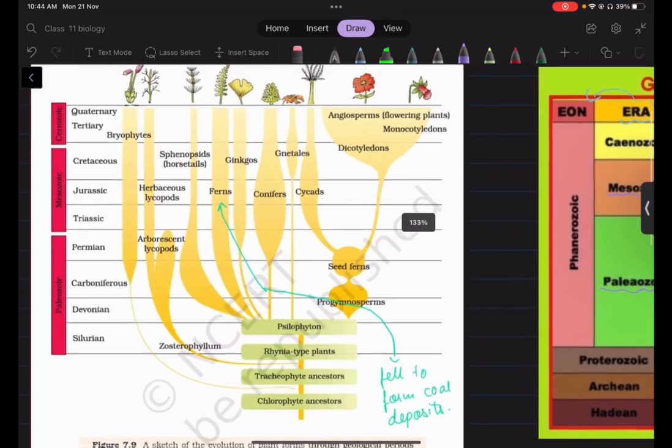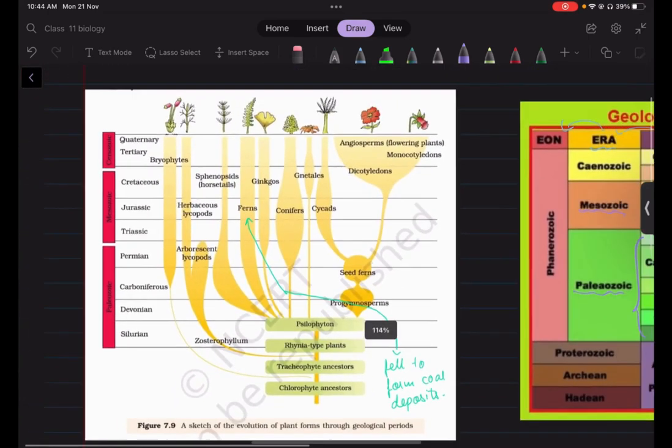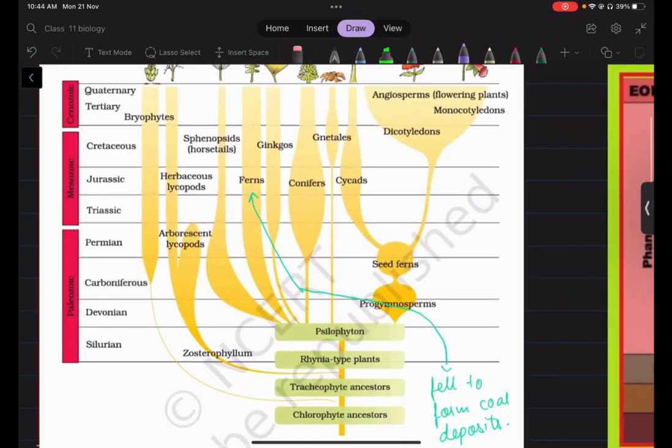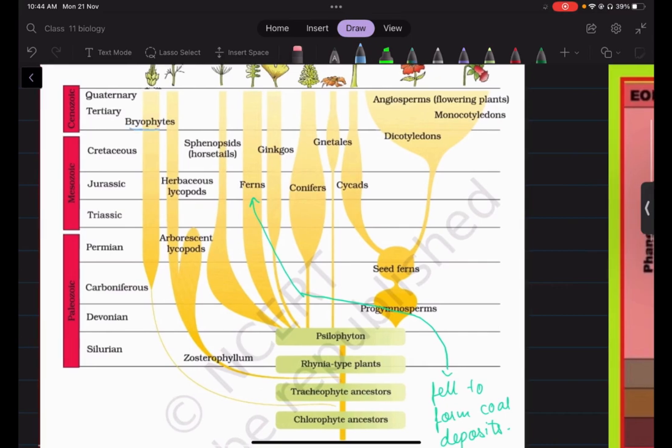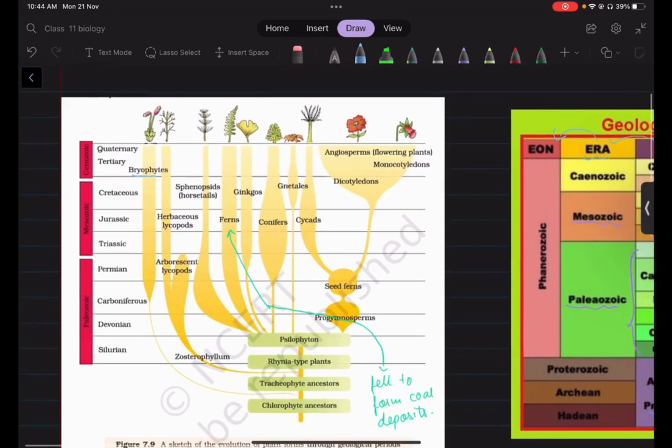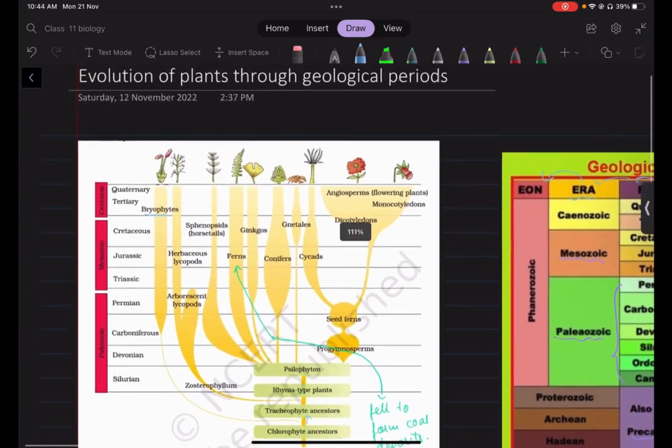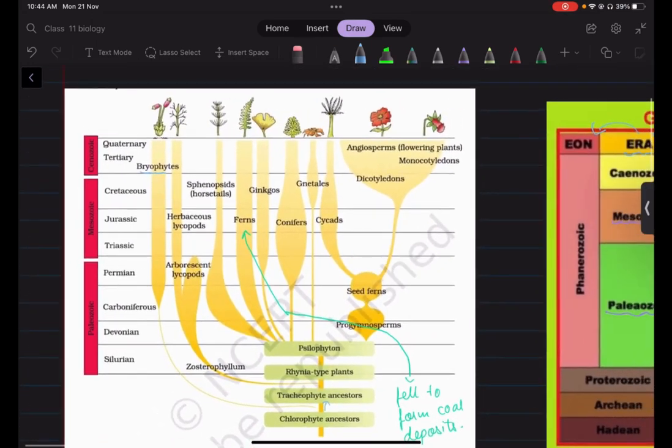So the most primitive plants were the chlorophyte ancestors. These were non-vascular and they gave rise to bryophytes during the Carboniferous period. Until today we find bryophytes on our earth. So these chlorophyte ancestors, they gave rise to tracheophyte ancestors. They are the most primitive form of plants that were vascular.